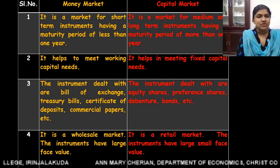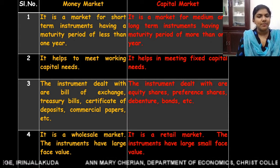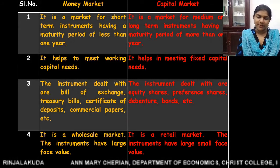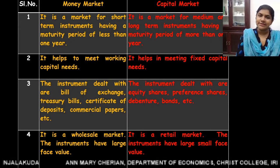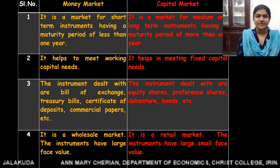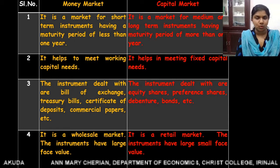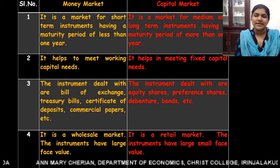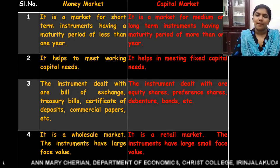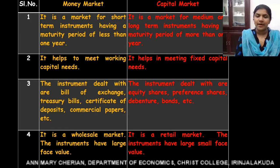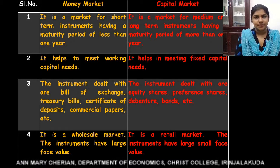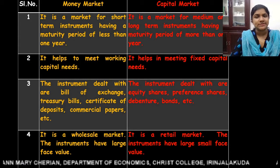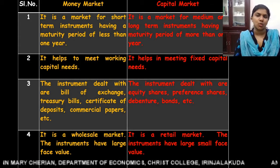The third difference relates to instruments. The instruments dealt with in the money market are bills of exchange, treasury bills, certificates of deposit, commercial papers, and so on. Whereas instruments dealt with in the capital market are equity shares, preference shares, bonds, debentures, and so on.